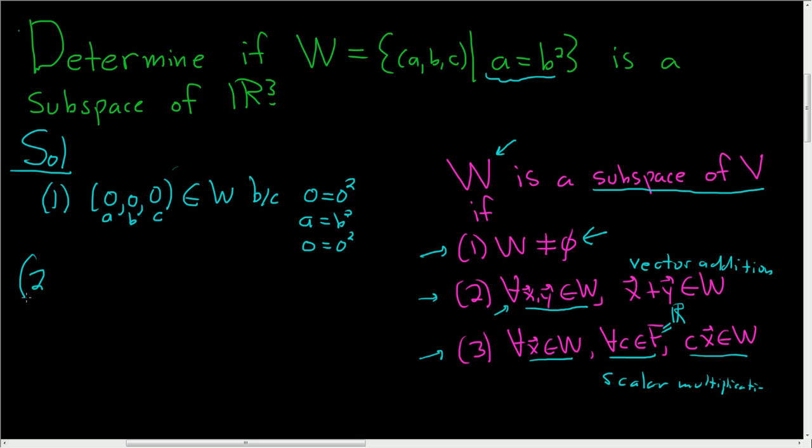I think the second condition should work. To violate the second condition, we need to find two vectors that are in W whose sum is not in W. Let's come up with two vectors that are in W. What does it mean to be in W? It means that a equals b².